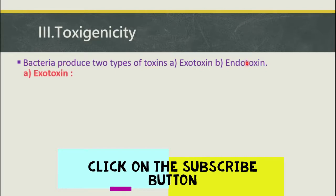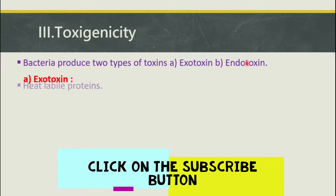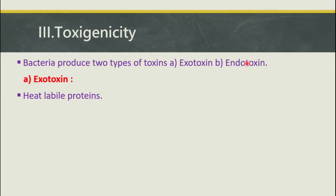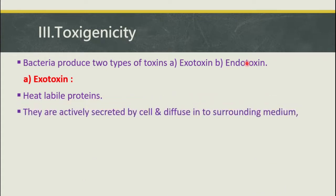First we will see about the exotoxin and its various properties. Exotoxins are freely secreted and are heat-labile proteins — that means they are protein in nature. They are actively secreted by the cell and diffuse into the surrounding medium.